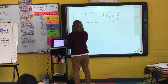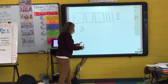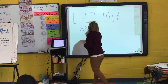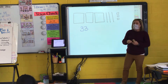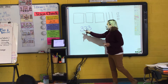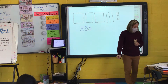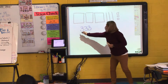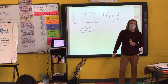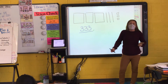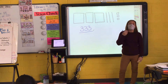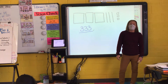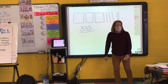How many tens? Three. And Dylan, how many unit cubes? Three. Kira, what is this number? How many hundreds? How many tens? How many ones? 333. What's this number? 333. So the number that I have drawn a picture for is 333.